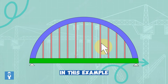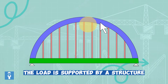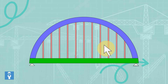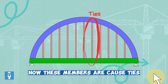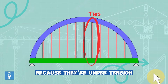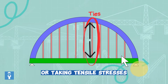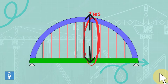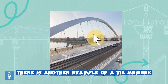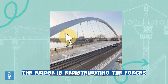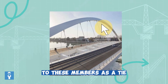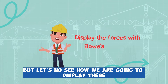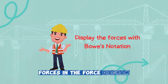In this example, the load is supported by a structure on top of the bridge connected to members. These members are called ties because they're under tension — taking tensile stresses as they're being pulled apart. There is another example of a tie member: the bridge is redistributing the forces to these members as ties. Let's now see how we display these forces in a force diagram.